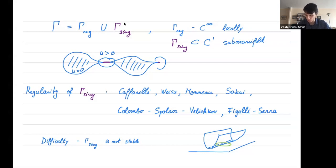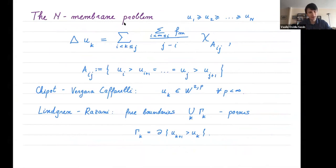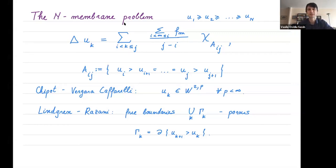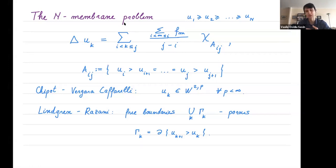Now we try to have a similar analysis for the N-membrane problem. The system says u1 ≥ u2 ≥ ... ≥ u_N, and when you look at the Laplace of u_k, this depends on how many membranes coincide with u_k at that point. If u_k coincides with u_{i+1}, u_{i+2}, ..., u_j at a point, then the right-hand side is given by the average of those right-hand sides. Not too much was known about this problem originally — Chipot and Vergara-Caffarelli showed solutions are in W^{2,p} for any p less than infinity.